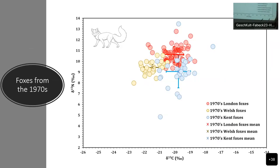We've got the 1970s foxes. We can see that in terms of carbon, we've got the Kent ones in light blue and the London ones in light red. Then, we've got the Welsh foxes. We can see that the Welsh foxes are a bit different from the Kent and the London foxes. But the difference is not much. They are all C3. They are all eating C3 terrestrial resources.